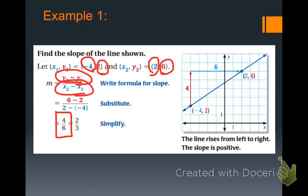With slope, you always want to leave it as a fraction, so don't try to write that as a decimal. In this particular example, the line is rising from the left to the right, so it's going up. You can almost think about a roller coaster going up, so it has a positive slope. And numerically, 2 thirds is a positive number.